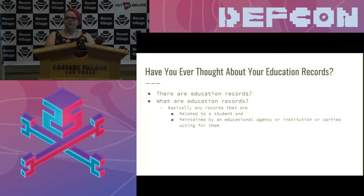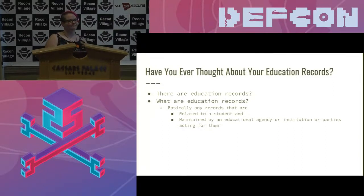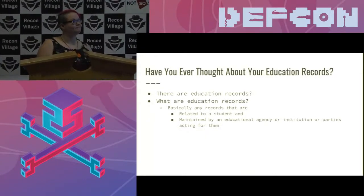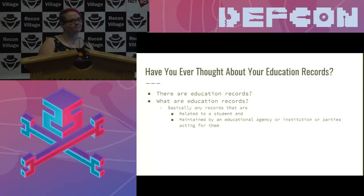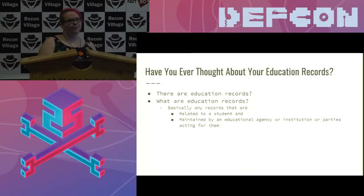Have any of you ever thought about your education records? Under FERPA, education records include your student ID numbers tied to the classes you're registered for, people financing your college education, and things of that nature. There are rules in higher education about data availability — for instance, even if you're 18 and your parents are paying for your education, they can't access your records because that's protected information.